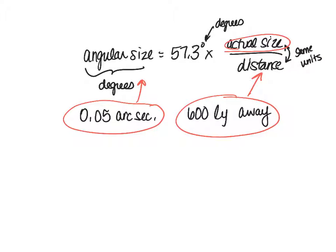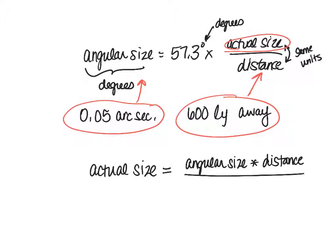And so what we're actually trying to find is the actual size of the object. So let's look at this expression that I wrote, and let's think about how we could rearrange it so we would have the actual size. So if we multiply and get this actual size all by itself on one side, we would have the angular size, and we would multiply by the distance.